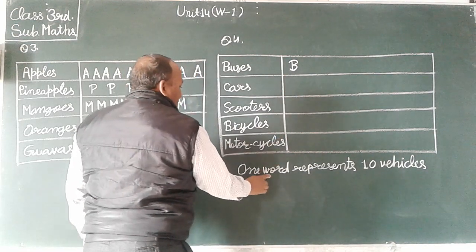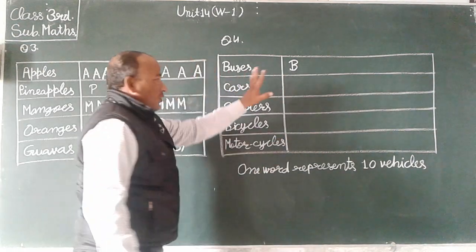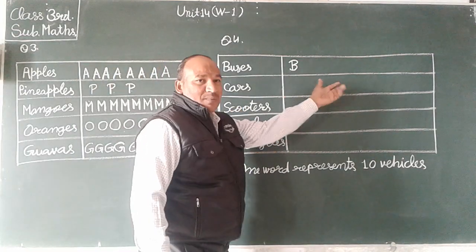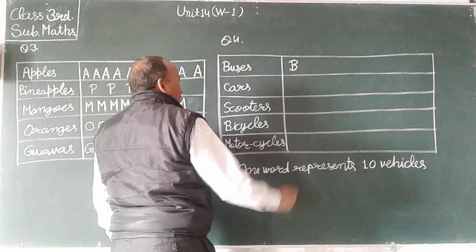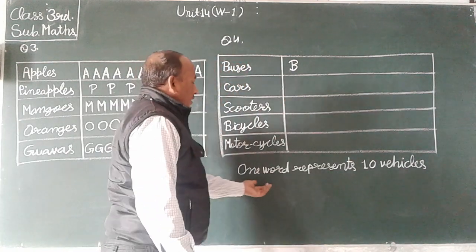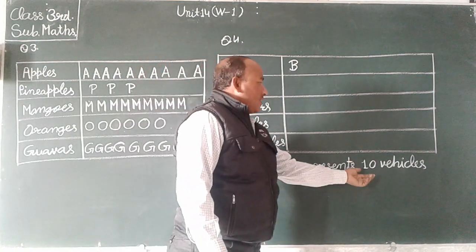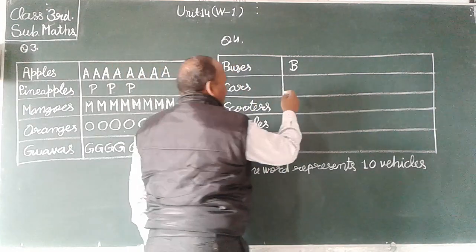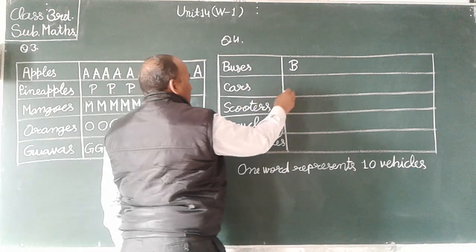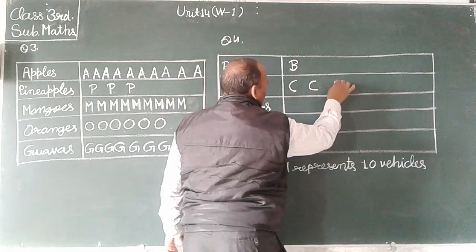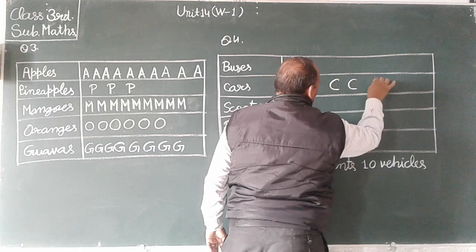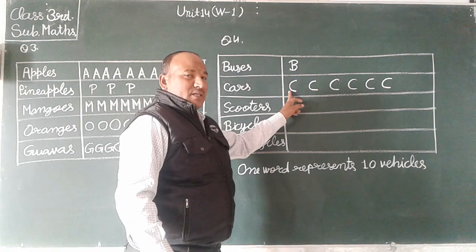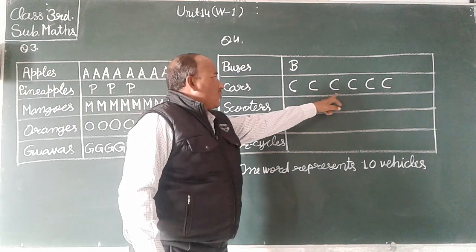One word: 60. 6, or 10. Car 6, 1, 2, 3, 5, 6. 10, 10. 60.